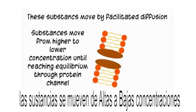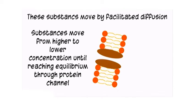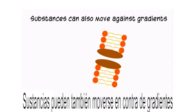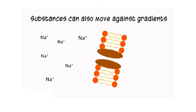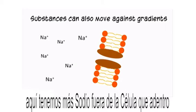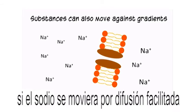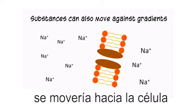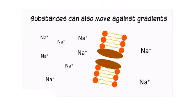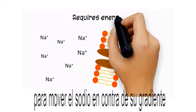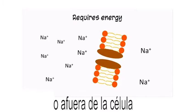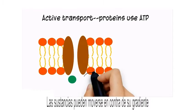Substances can also move against gradients. Here we have more sodium outside of the cell than in. If sodium moved by facilitated diffusion, it would move into the cell. However, energy can be used to move sodium against its gradient, or outside of the cell.